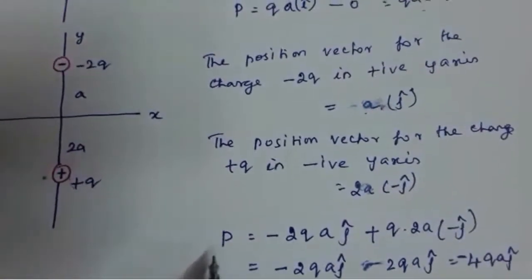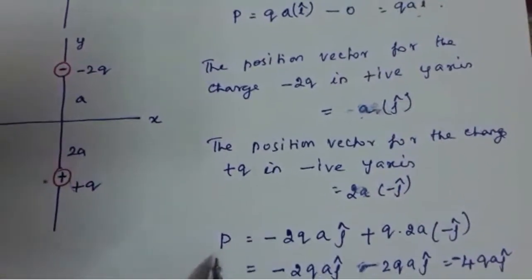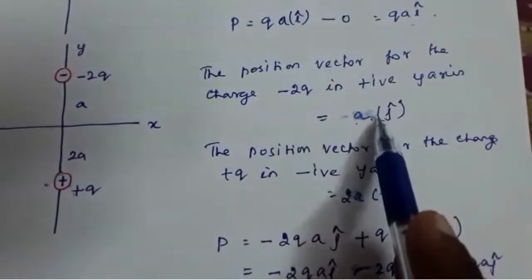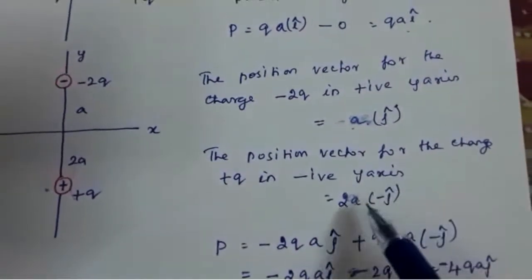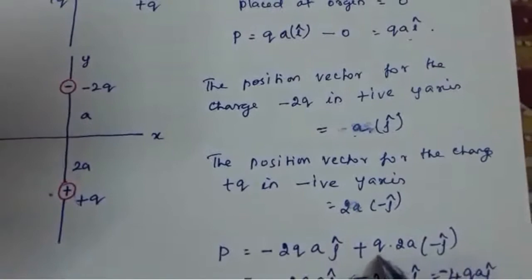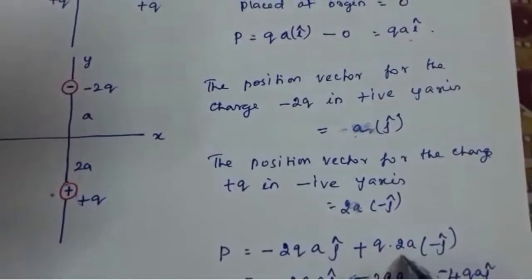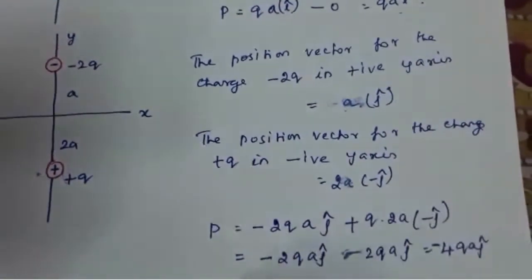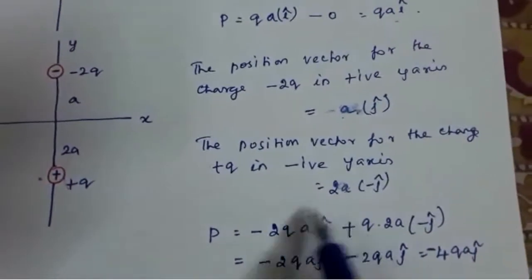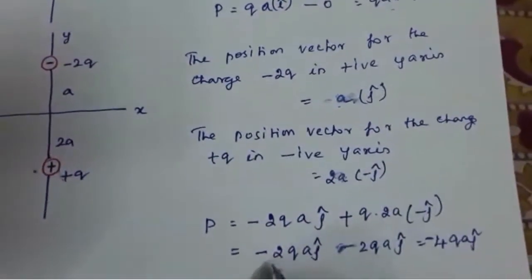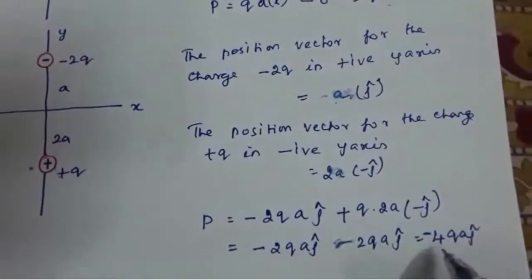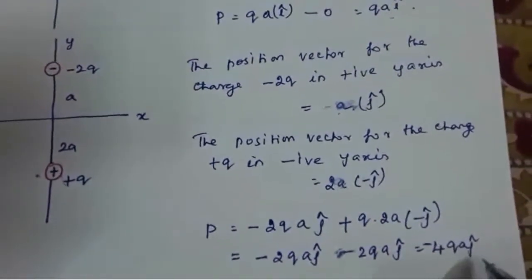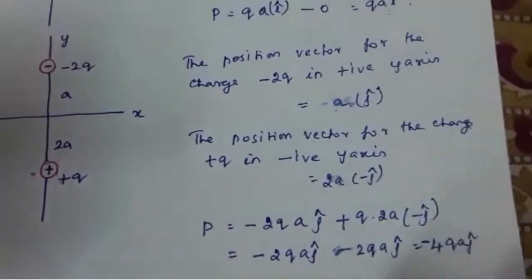Now writing the dipole moment: P = (-2q)(aĵ) + q(2a)(-ĵ). Both terms are negative, so minus and minus gives -2qaĵ - 2qaĵ, resulting in -4qaĵ.